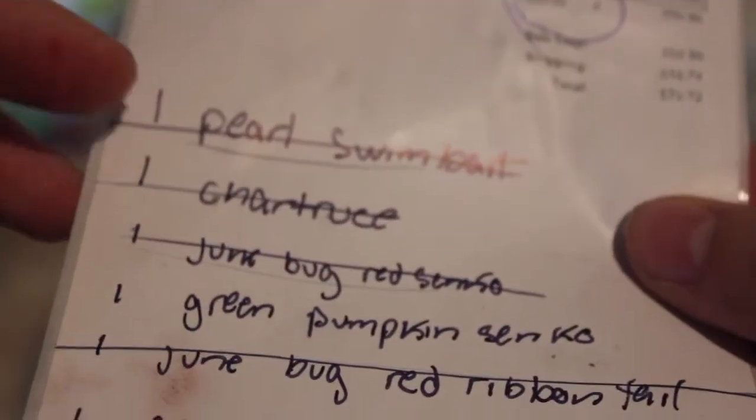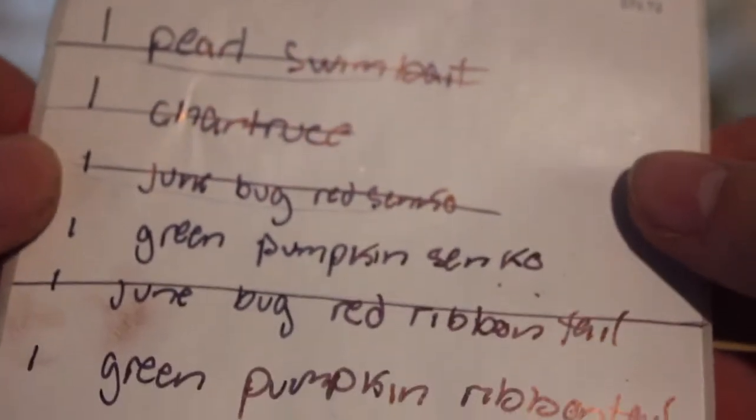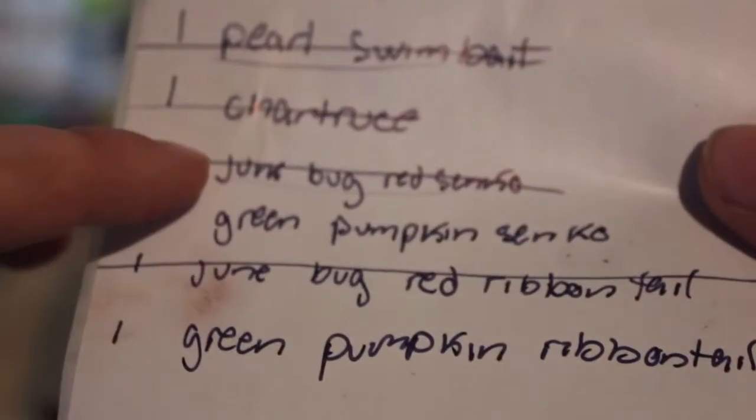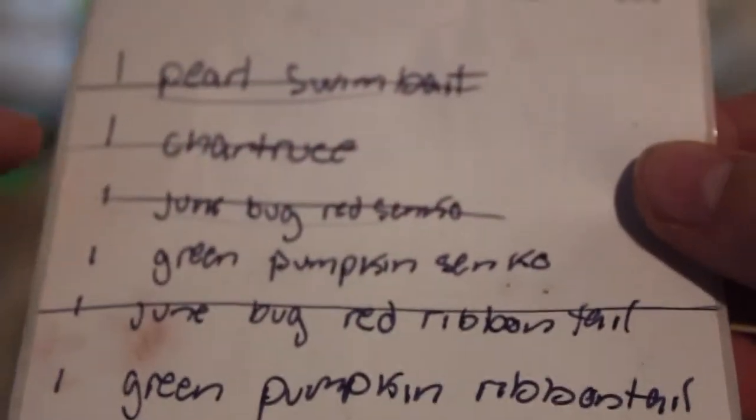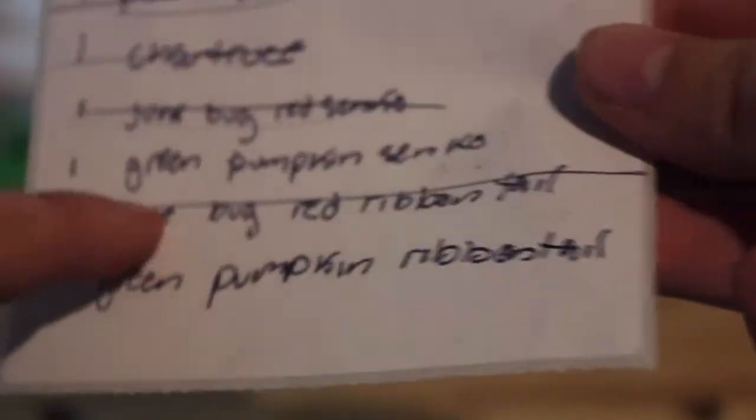For this order, I already have it written down. I need a pack of pearl swimbaits, a pack of chartreuse swimbaits, Junebug red senkos (which I'm horrible at making the color Junebug, but we're going to try it again), green pumpkin senkos, Junebug red ribbon tails, and green pumpkin ribbon tails. So first we got to heat up some plastic.